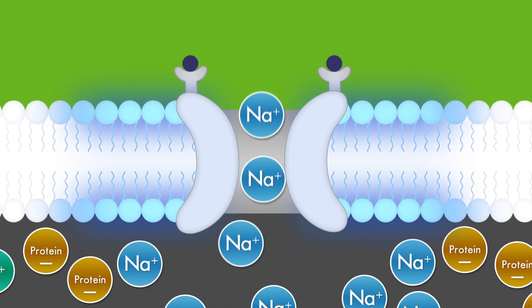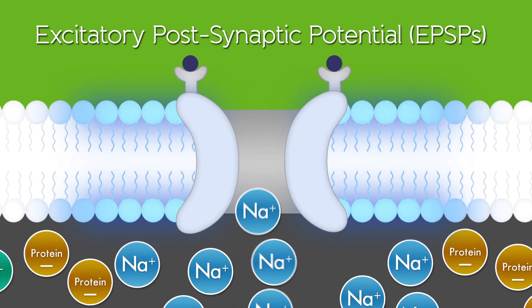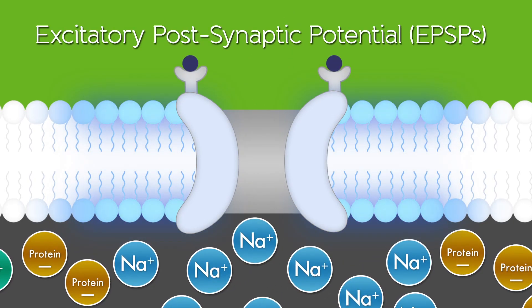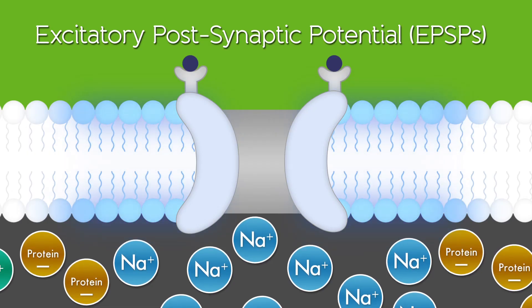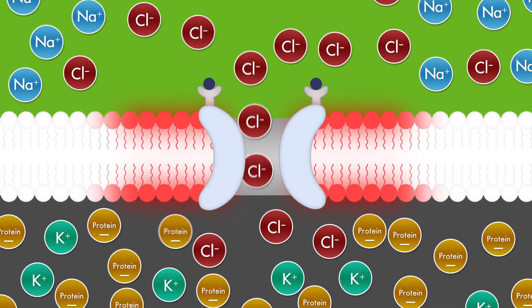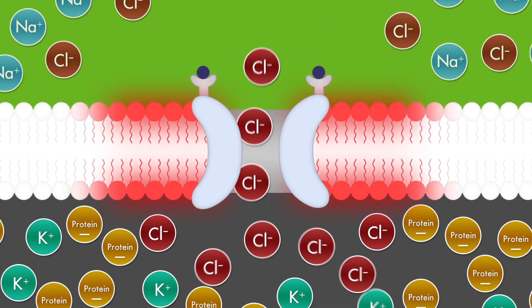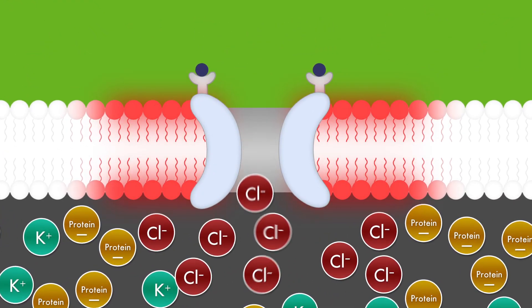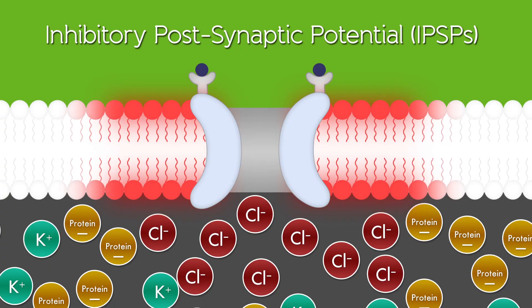This small change in the membrane is called an excitatory post-synaptic potential. Similarly, it is also possible that part of the cell becomes more negative, for example, by influx of negatively charged ions. This is called an inhibitory post-synaptic potential.